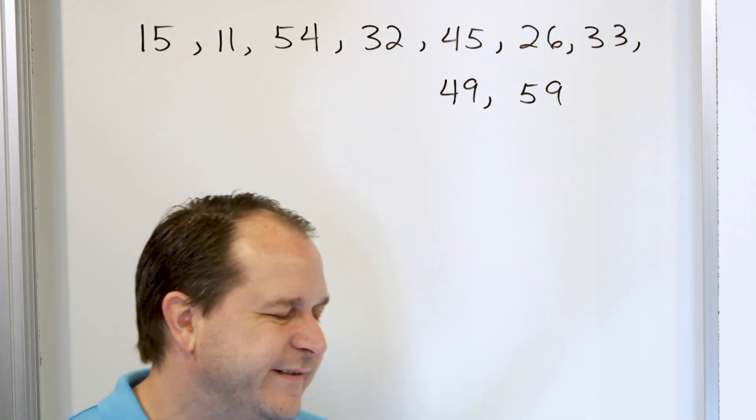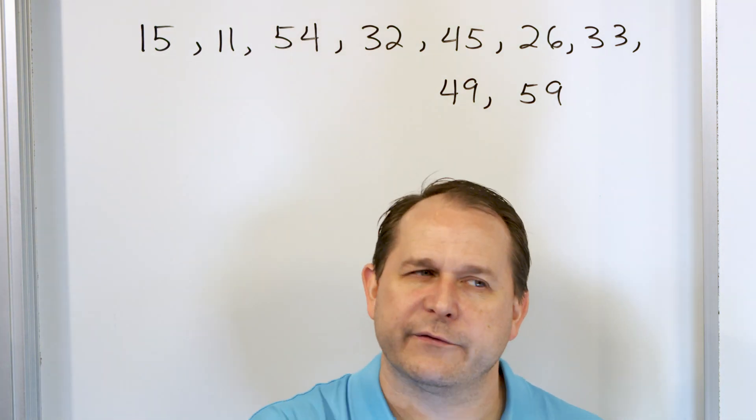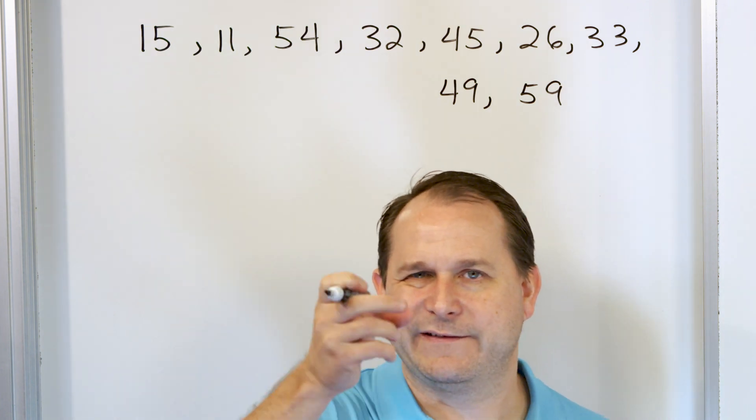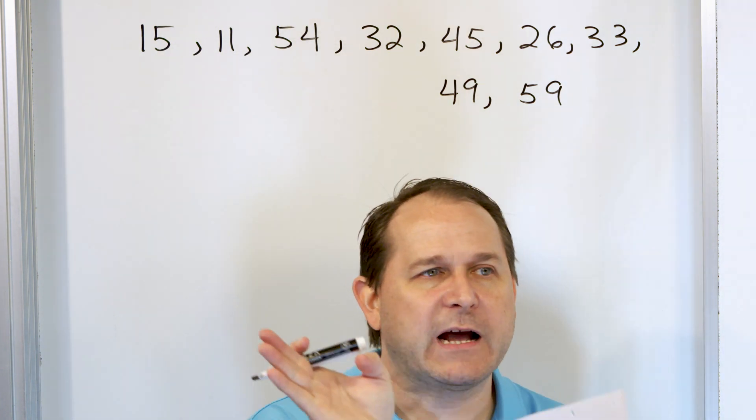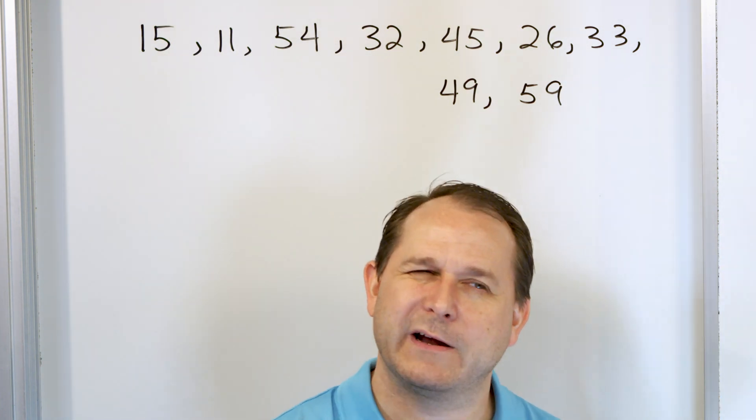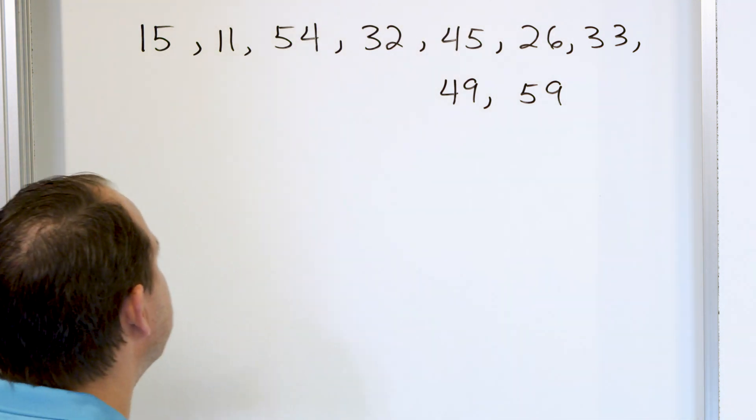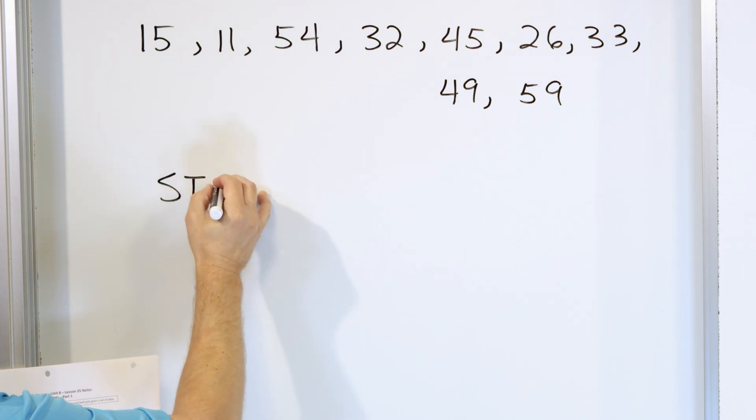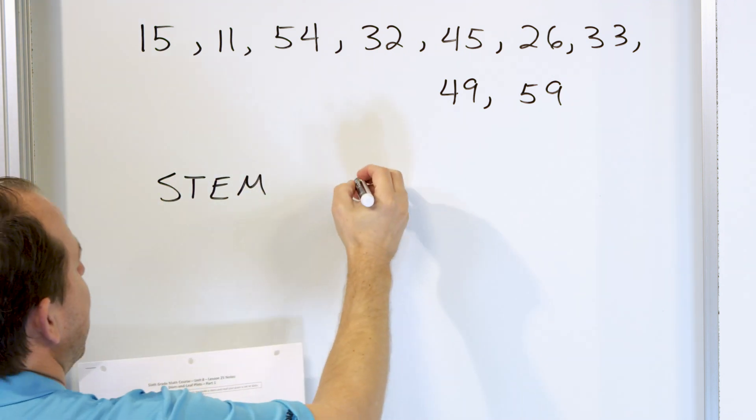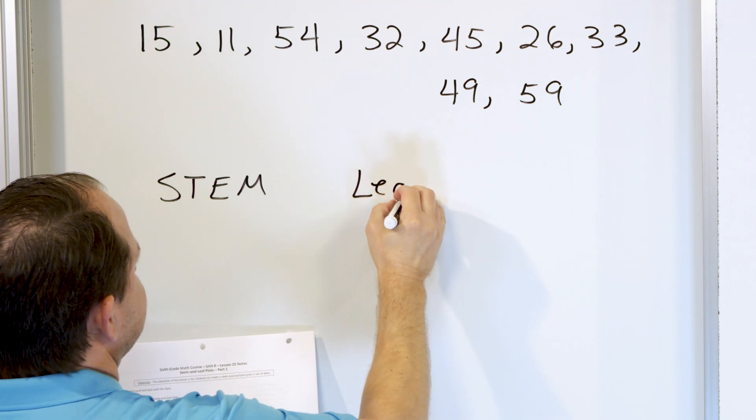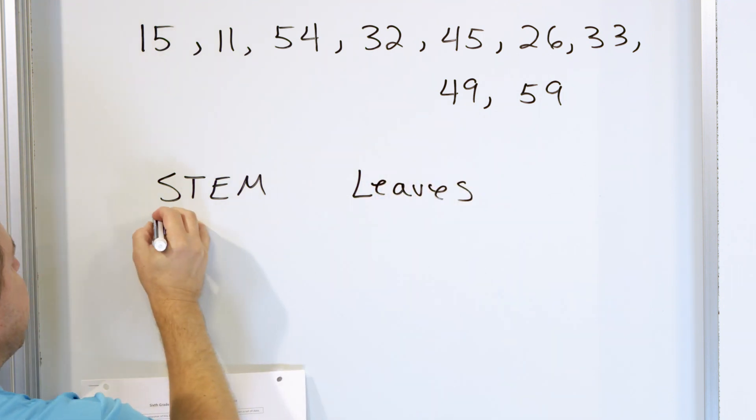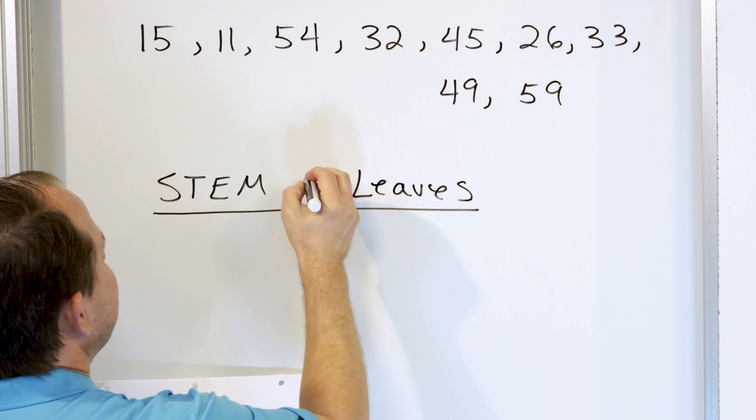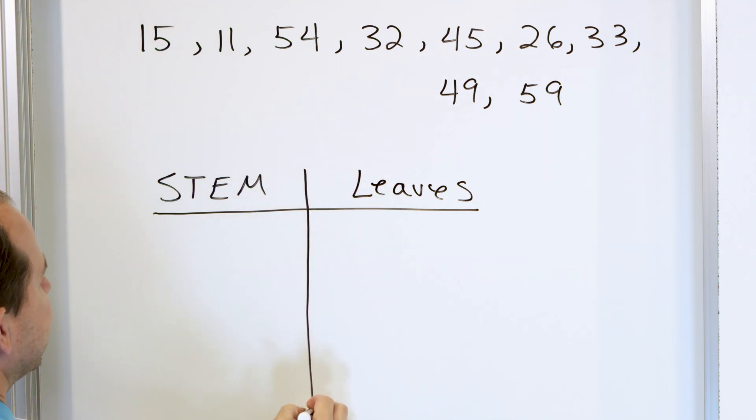You need to think about stem and leaf being like a little tree. There's a trunk of a tree, which is kind of a stem, and then you have leaves that kind of come off in different directions. So we have kind of a trunk, and then the leaves that kind of come off there. So we're going to make a little table, and it's called a stem and leaf table. So here is the stem, and then over here we'll put leaves. Very simple. So we're just going to draw a little table like this.